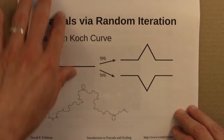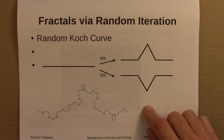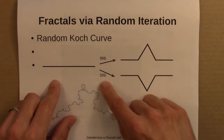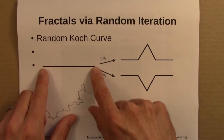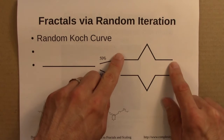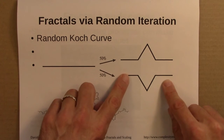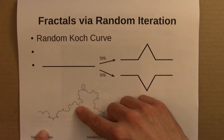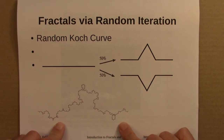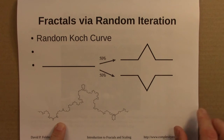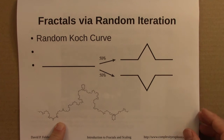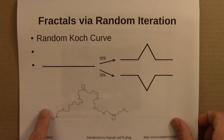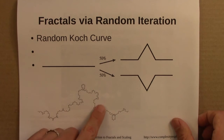Instead of thinking about a deterministic system, let's think about a random system. Now the rule is: take a line, replace it with a bent line up half the time, and half the time with a bent line down. This change produces what I think are really interesting looking fractals — these random Koch curves that look a lot like coastlines, or maybe the ridge top of mountains.